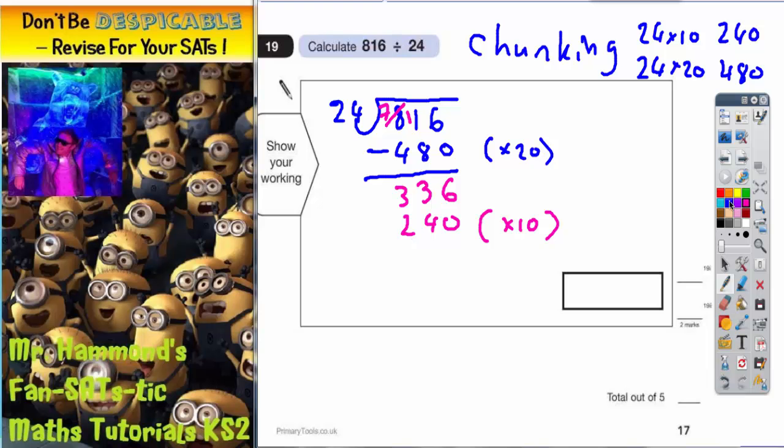So I now need to subtract 10 lots. 6 take away nothing is 6, 3 take away 4 I can't do so I borrow one, that now makes 13, 13 take away 4 is 9, 2 take away 2 is nothing, so I'm now down to 96.